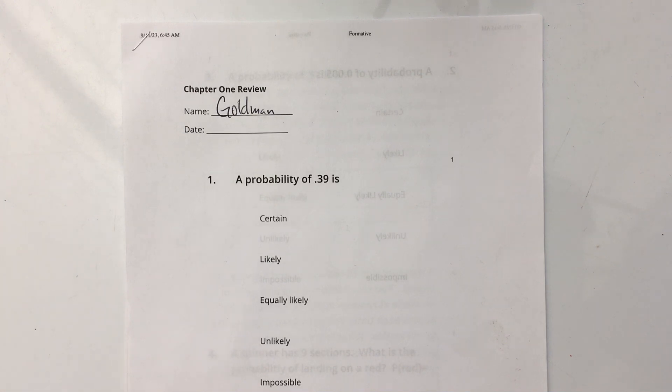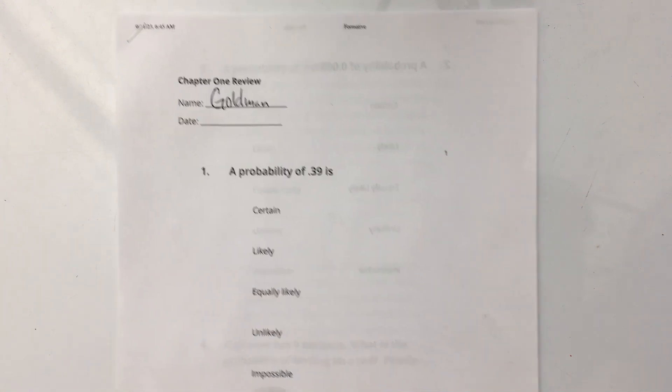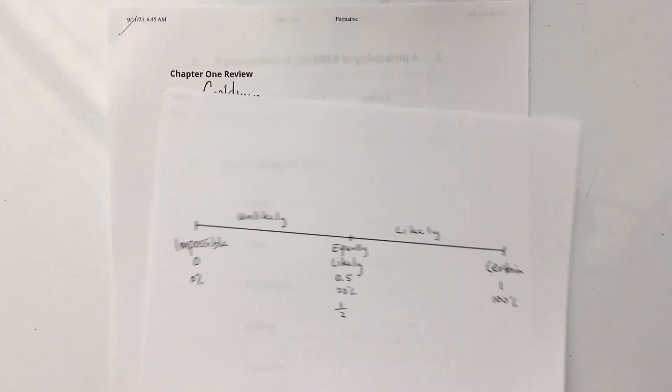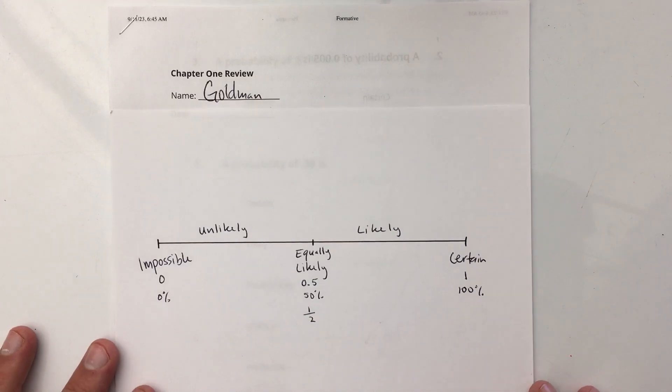Question 1. The probability of 0.39 is, and as a quick refresher, look at this. This is our little number line here.